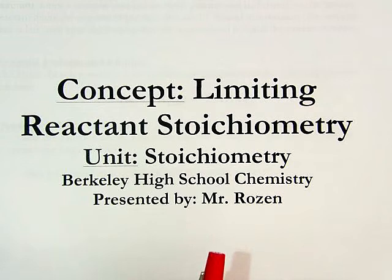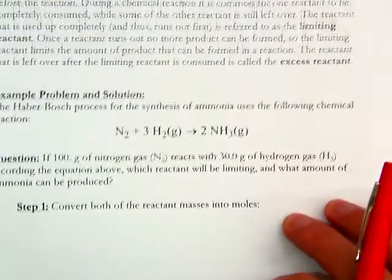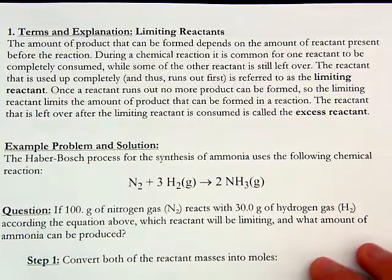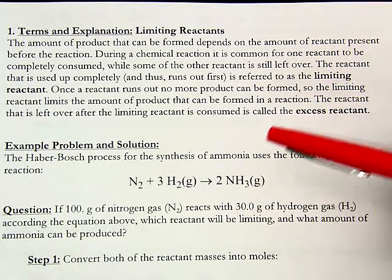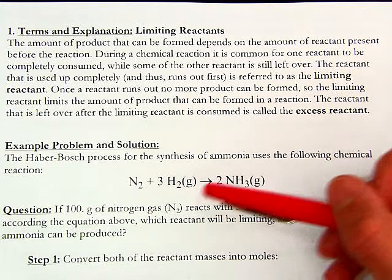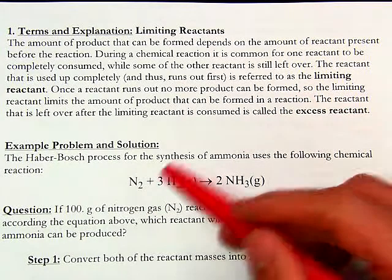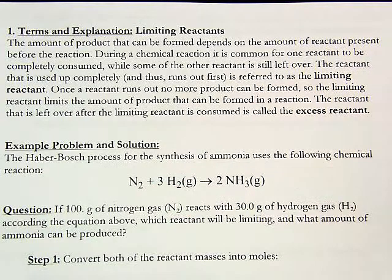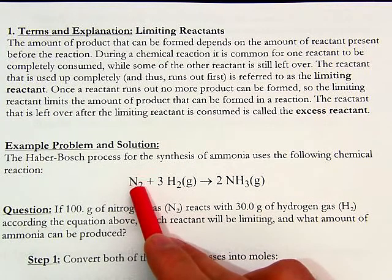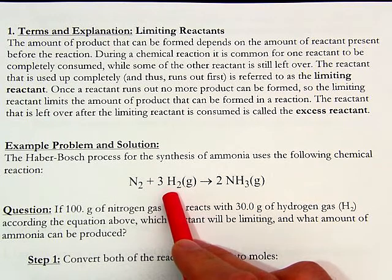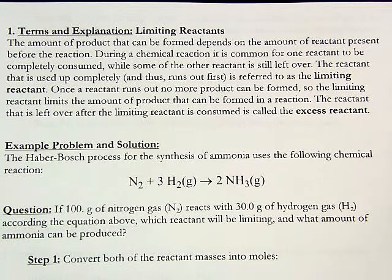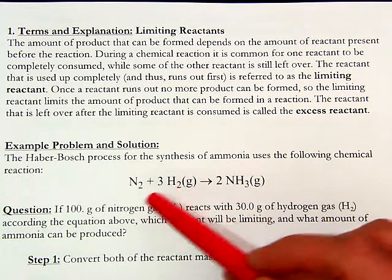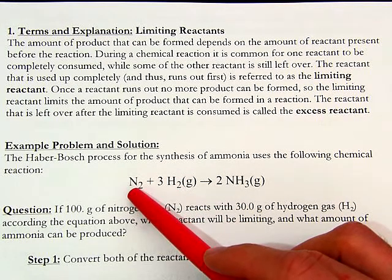The idea behind limiting reactant stoichiometry is that when you have a chemical reaction occurring, in the most typical chemical equation you'll have maybe two reactants interacting with each other. As the reactants are getting used up, the products are increasing. The reactants get used up in different amounts or different ratios, and that's why we have these coefficients in front of the balanced equation. For this equation, for every one mole of nitrogen, three moles of hydrogen gets used up.